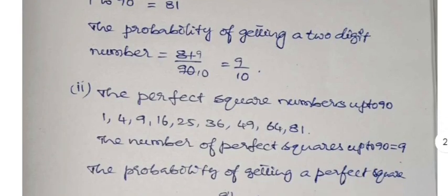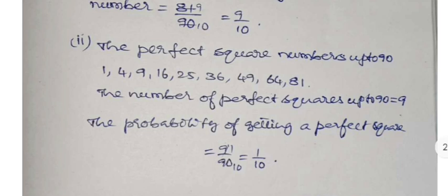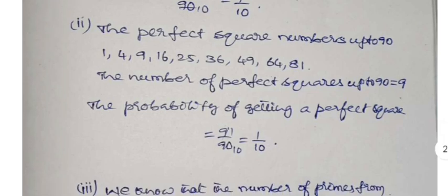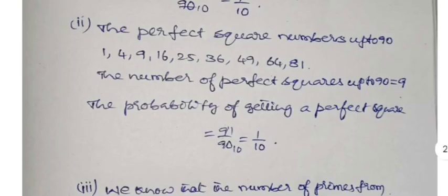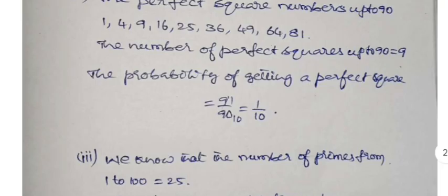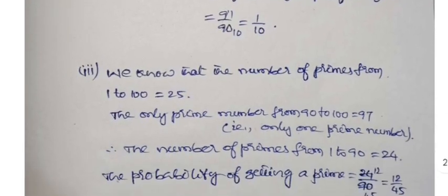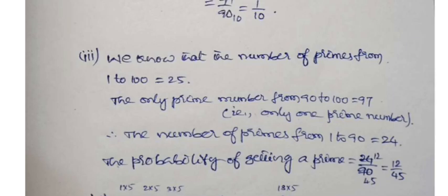Number of two digit numbers from 1 to 90 is 81. The probability of getting a two digit number is 81 by 90, that is 9 by 10. The perfect square numbers up to 90 are 1, 4, 9, 16, 25, 36, 49, 64, 81. The number of perfect square numbers up to 90 is 9. The probability of getting a perfect square is 9 by 90, that is 1 by 10.